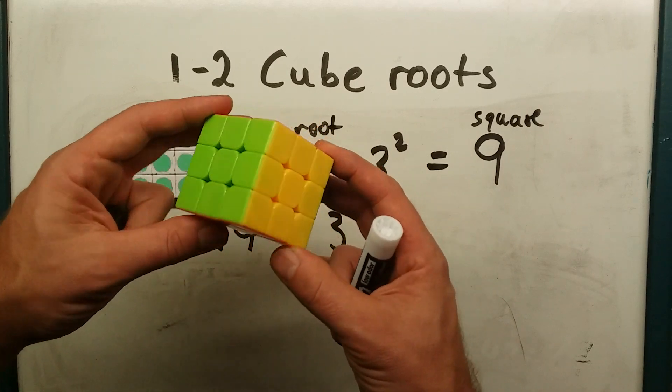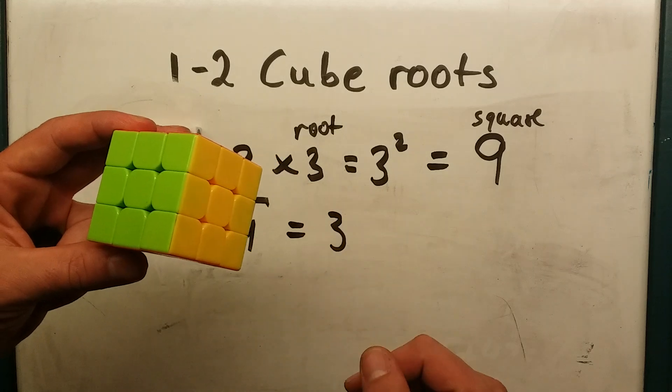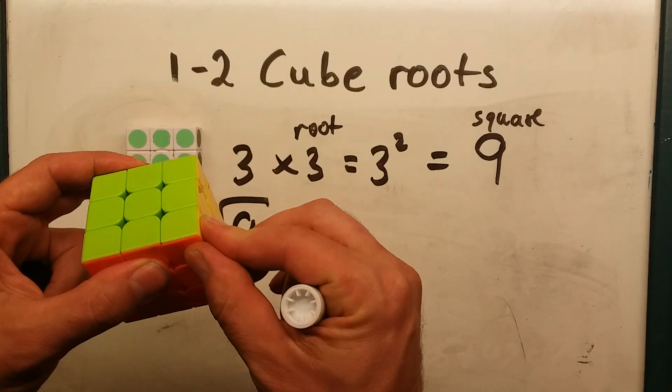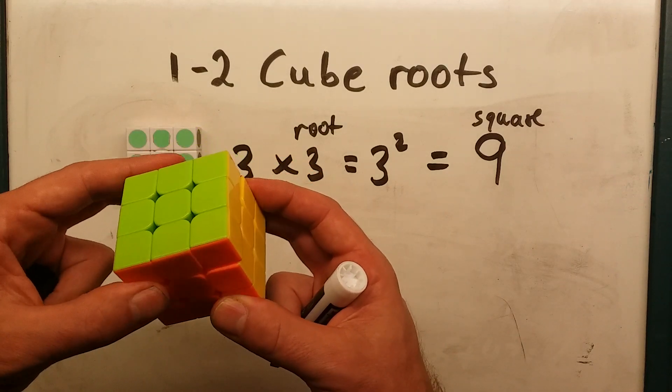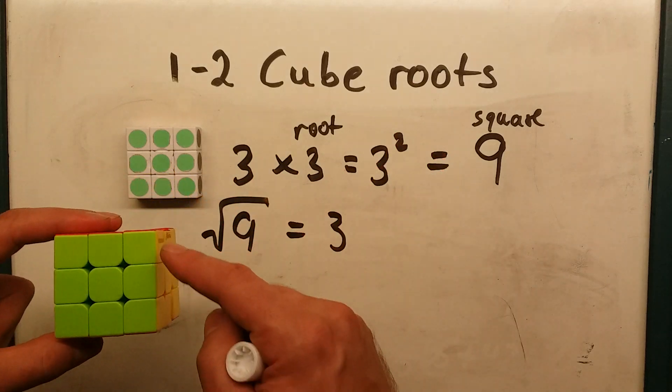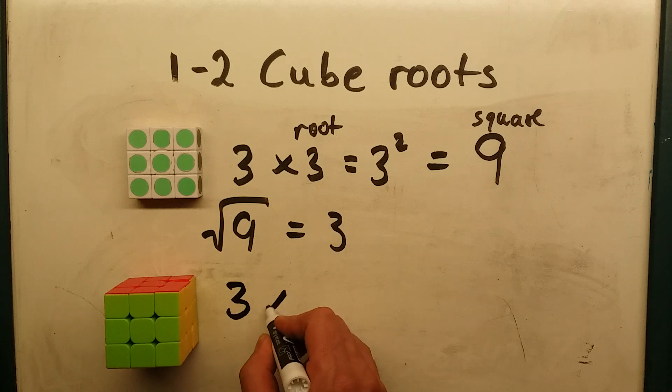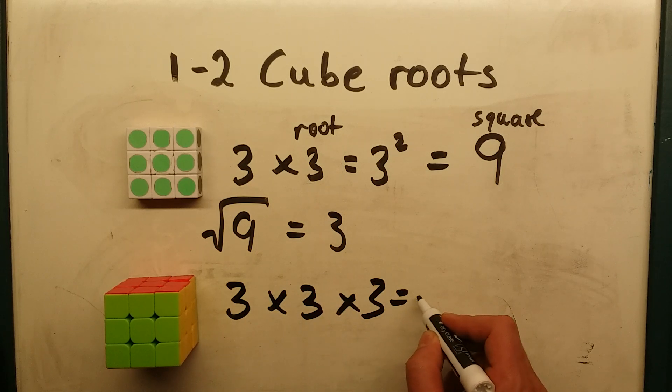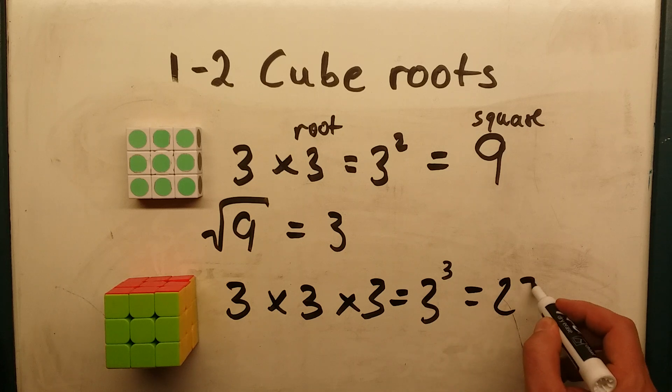Now, here we have a cube. This has three dimensions: Length, Width, and Height. So in order to find the volume of this, to see how many little cubes are there, well there's 9 in this layer, 9 in this, 9 in this. So that would be 27, or 3 times 3 times 3. So here I have 3 times 3 times 3. That's also 3 cubed. 3 to the third power we call 3 cubed, which is 27.